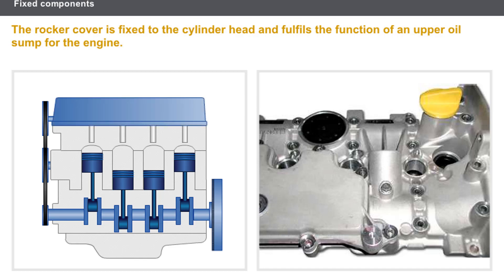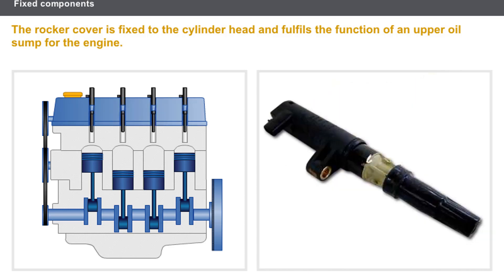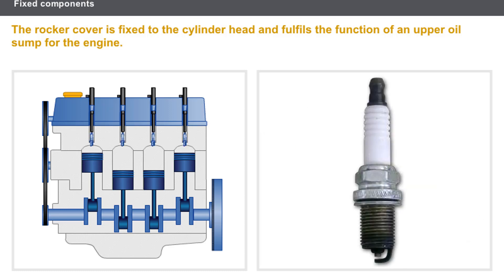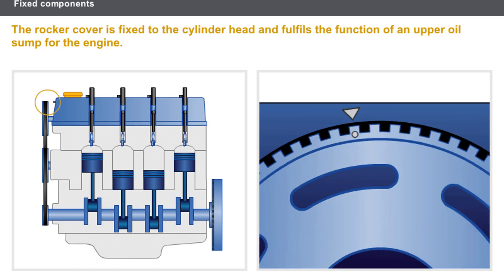The rocker cover is fixed to the cylinder head and fulfills the function of an upper oil sump for the engine. It has an engine oil filler plug, and on certain engines it contains the ignition coils and the spark plugs.